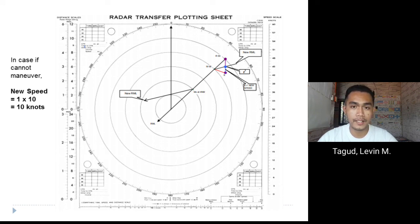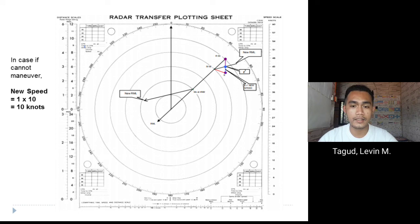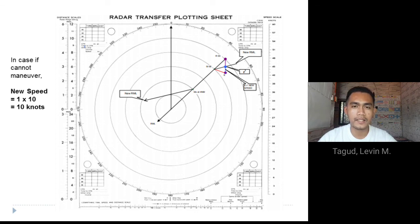If the vessel cannot alter course, we reduce speed instead. To find the new speed, R1 is located at the intersection of the new relative motion line and the E to R line. We measure the distance from E to R1 using the distance scale — 1 nautical mile — multiplied by 10, giving a new speed of 10 knots. So when the other vessel reaches a range of 4 nautical miles, we reduce speed from 20 knots to 10 knots to avoid collision.